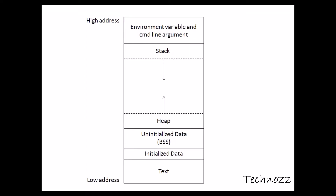Today we are going to discuss the memory layout of a process. In this diagram we can see that whenever a C program is running on an OS, its memory will be divided into these segments — the segments which a process has in an OS environment. I'll explain each and every field here.